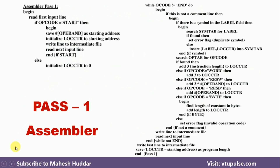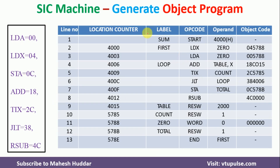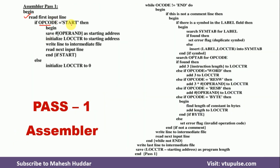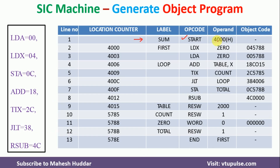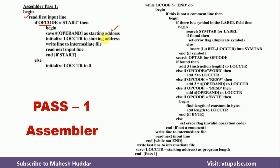This is the pseudocode of Pass 1 assembler. First, we will read the first input line. Once we read this first input line, we will check the opcode. I will show a simple example here — this is the assembly language program along with the object code. We read the first line and check the opcode. If the value of opcode is equivalent to START, we store the value of the operand into the starting address. The operand value is 4000, which is the starting address. We put that starting address into the location counter, so we can assign a location to each instruction. Then we write this line to the intermediate file and read the next line.